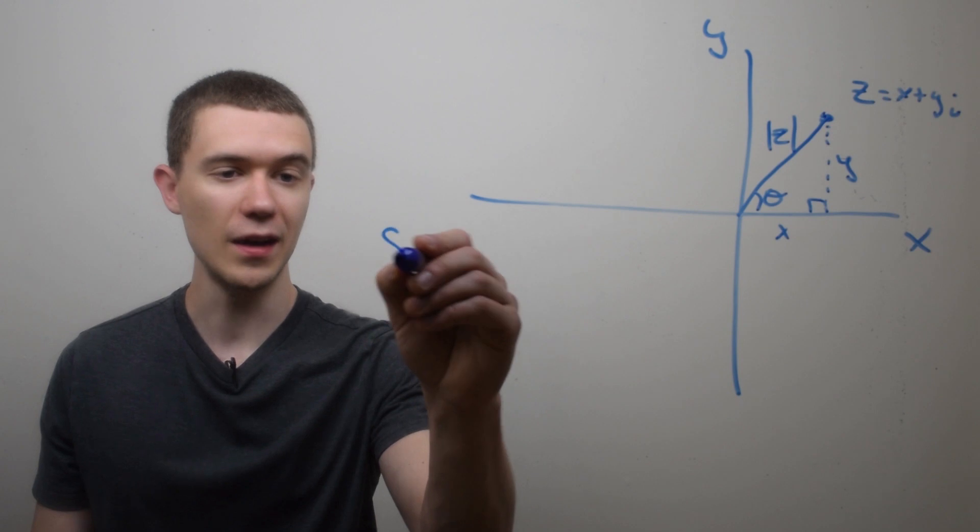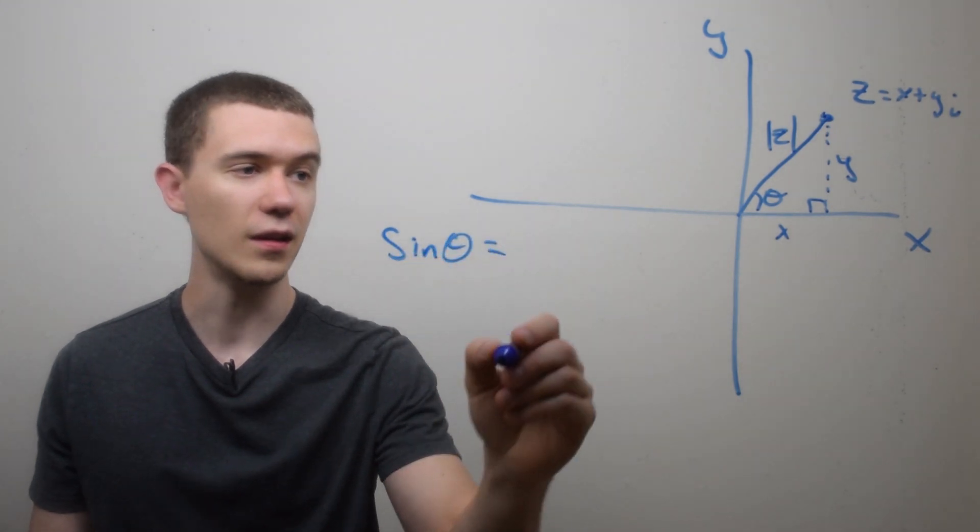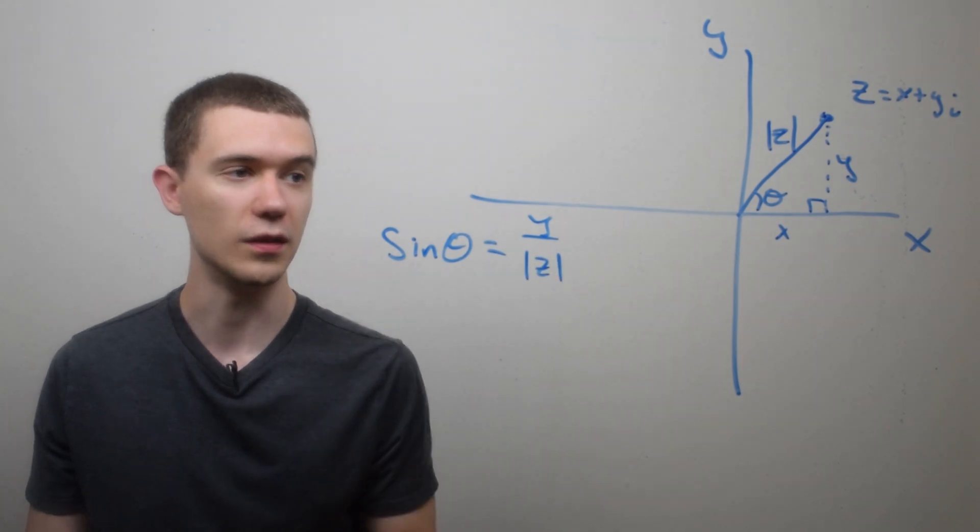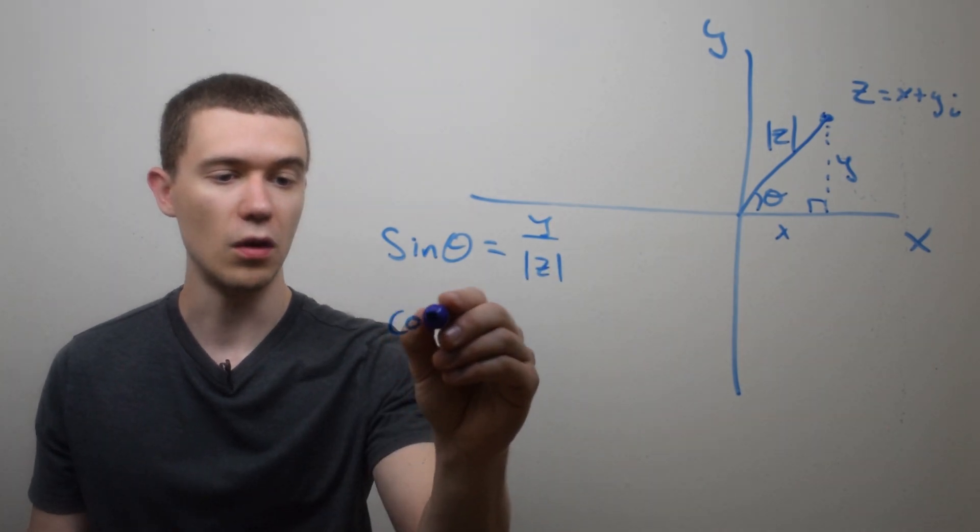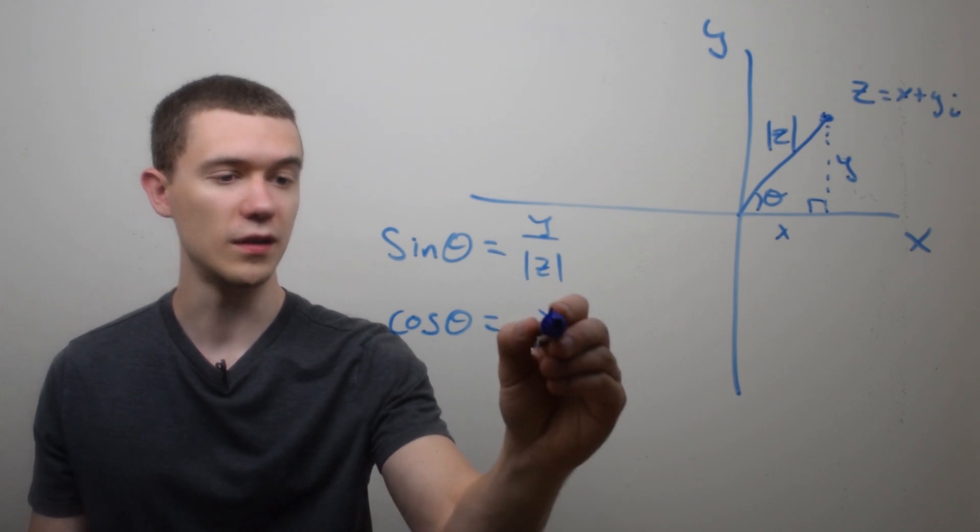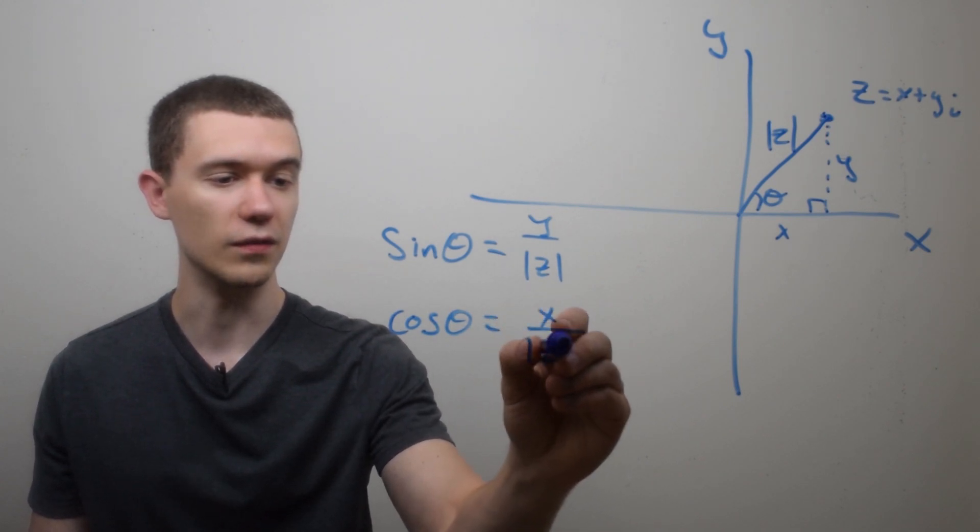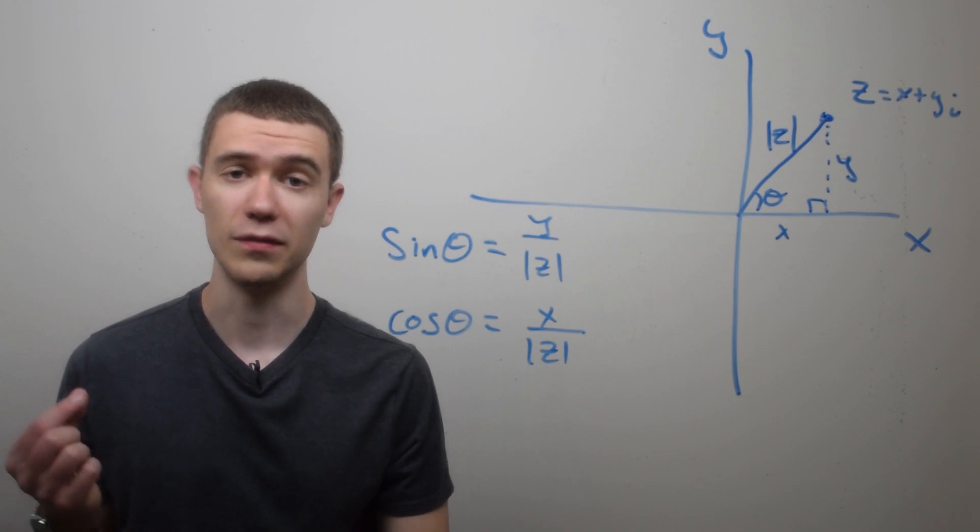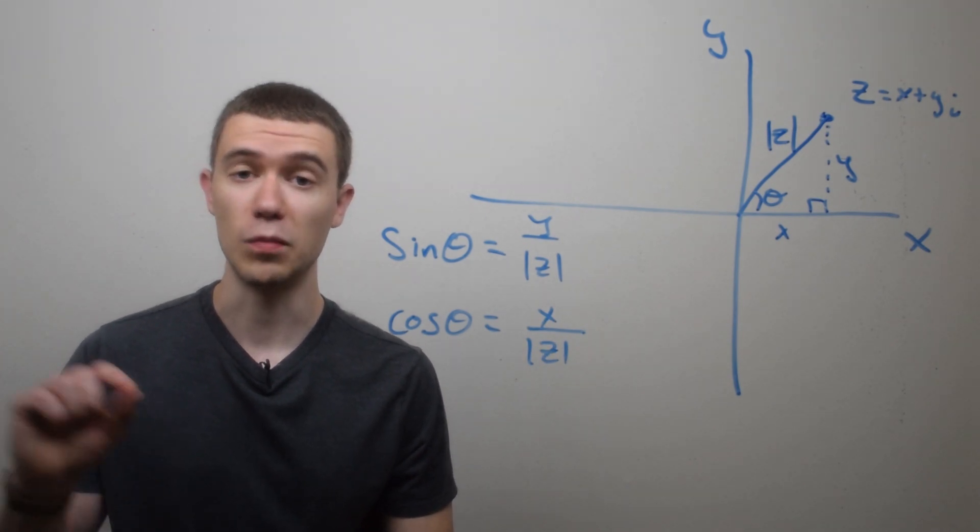So it looks like the sine of this triangle, sine theta, is opposite over hypotenuse, in this case the modulus of z. The cosine of this triangle is going to be the adjacent side, x, over the modulus of z. And I can just multiply both of these equations by the modulus of z to get an expression for x and y.